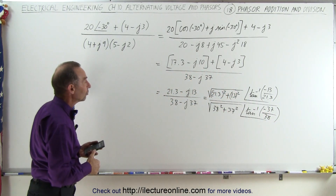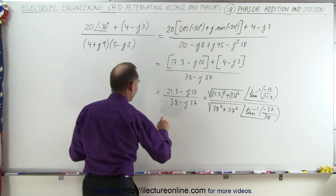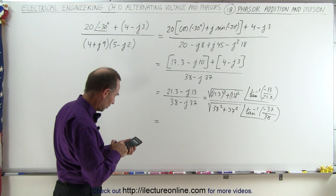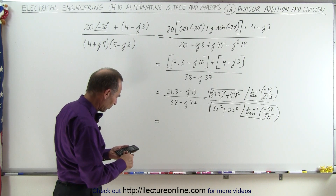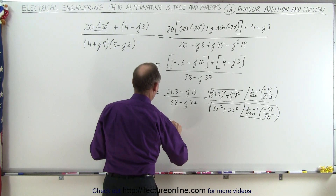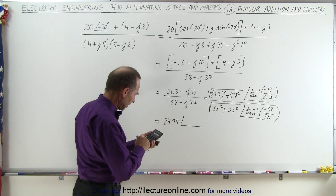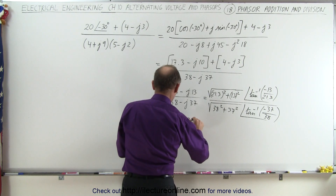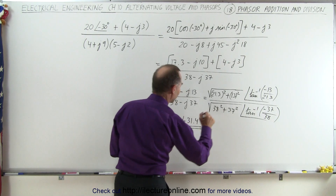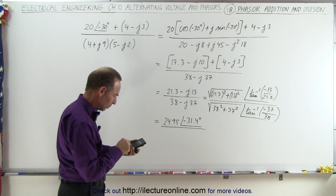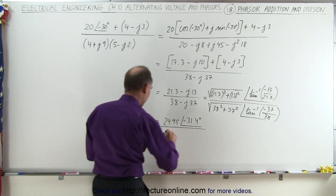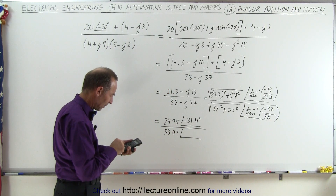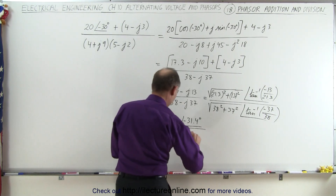So you first want to convert these to the magnitude and phase angles. For the numerator: 21.3 squared plus 13 squared — take the square root — that becomes 24.95, with a phase angle of the inverse tangent of minus 13 divided by 21.3, which is minus 31.4 degrees. For the denominator: 38 squared plus 37 squared — take the square root — that is 53.04. And the phase angle is the inverse tangent of minus 37 divided by 38, which is minus 44.2 degrees.